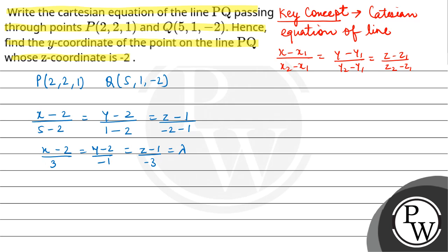So you're given the Cartesian equation of the line PQ. You have z-coordinate minus 2. So Z minus 1 upon -3 equals to lambda. Put the value of Z. -2 minus 1 upon -3 equals to lambda, so lambda equals to 1.